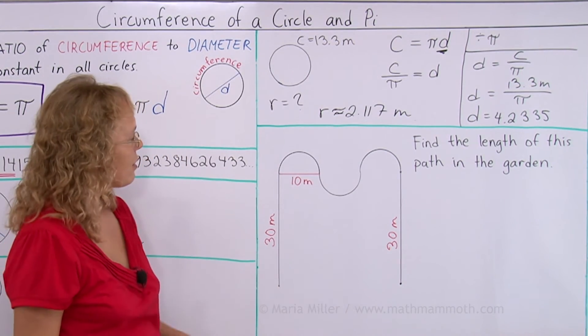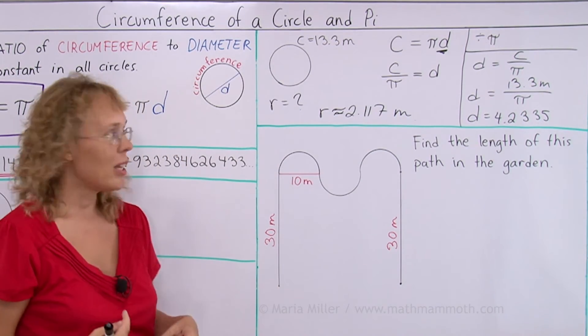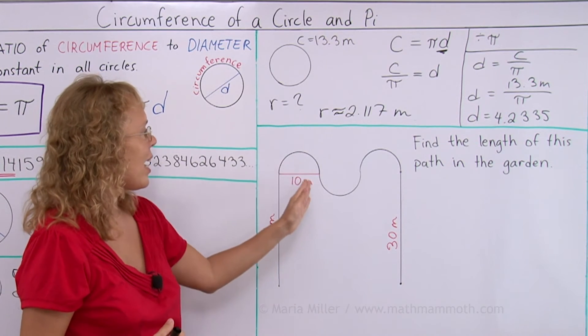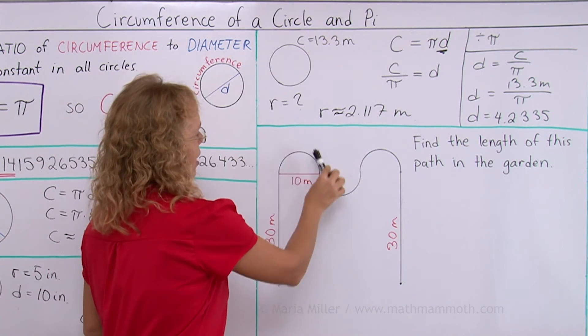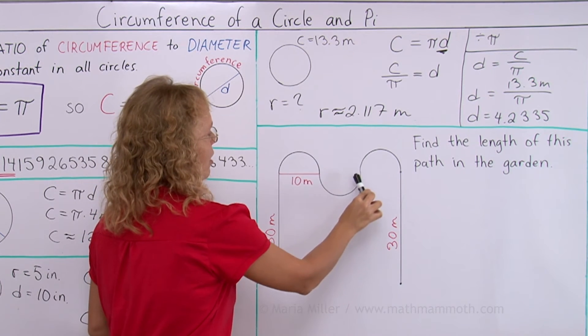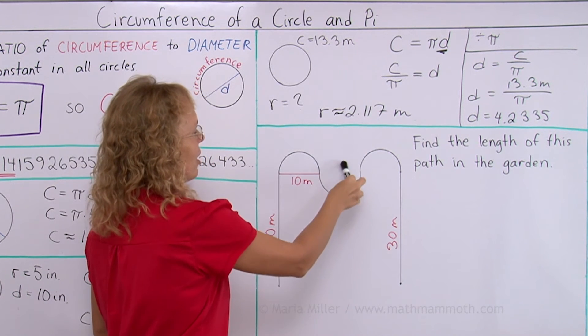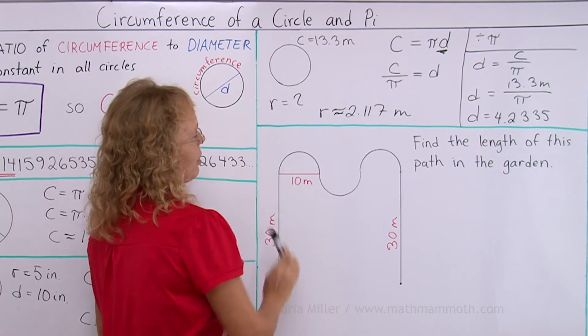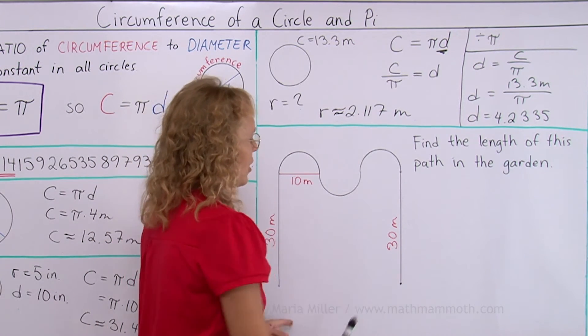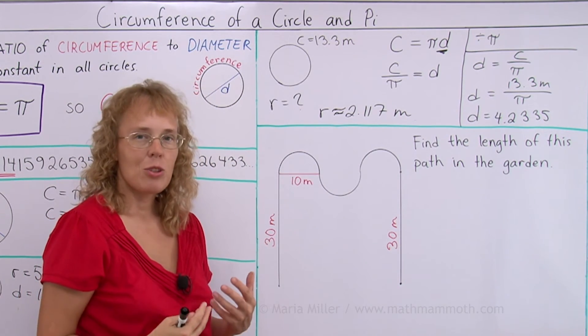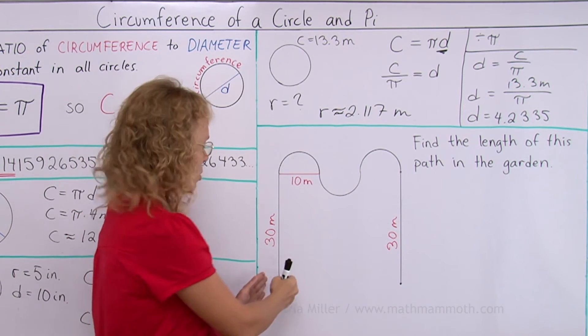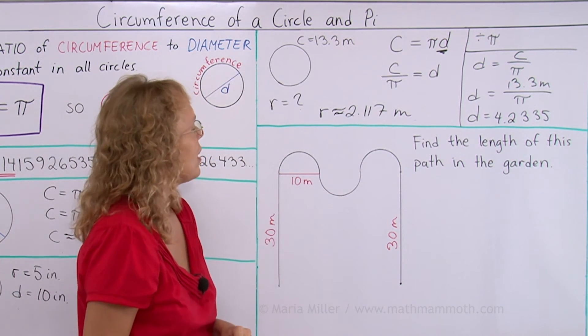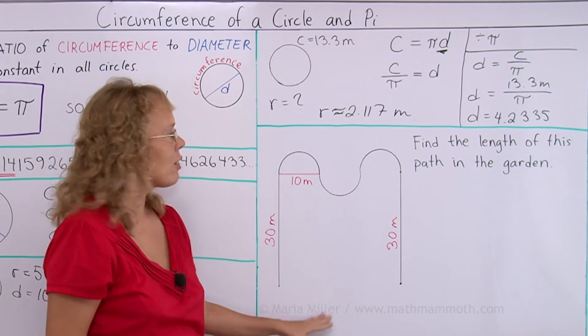Lastly, I have an application type of a problem here. Let's say that this would be a path in the garden. It was made nicely so that there's like a half circle here, another half circle here, another half circle here. You can imagine here some nice flower arrangements or something. And you need to know the total length of it to be able to maybe calculate how much stone you use to make the path or something. So we need to find the length, total length of this path.